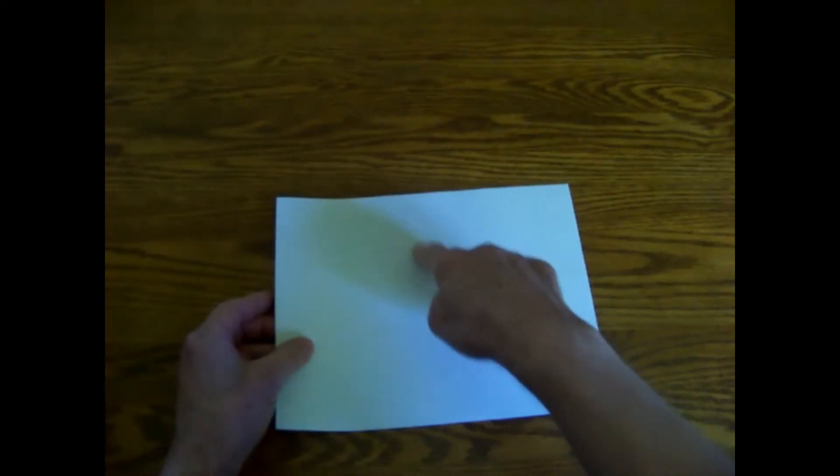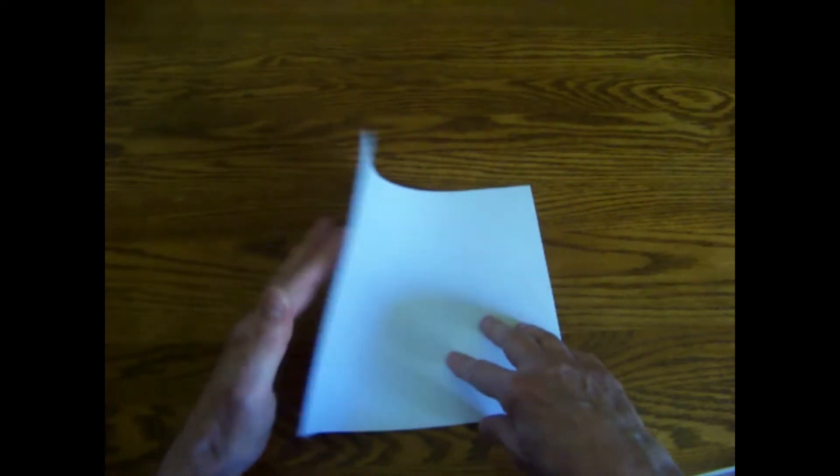This is a way to fold a rectangle into fifths. I begin with a standard sheet of typing paper. I'm going to first fold it in half so that the center line divides the long edge.